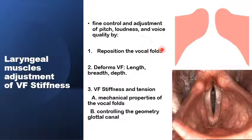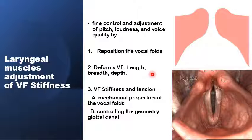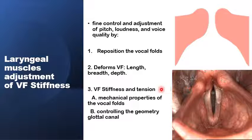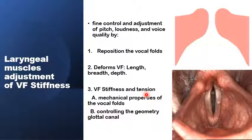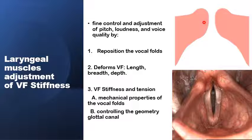This is basically achieved through repositioning of the vocal folds into an optimal position for voice production. Also, deforming of the vocal fold by stretching or compression, change of the length, the breadth, or the depth of the vocal fold itself, and by changing the vocal fold stiffness and tension. Changing the vocal fold stiffness and tension can lead to two important changes: changes in the mechanical properties of the vocal folds itself, and also controlling the geometry of the glottal canal.